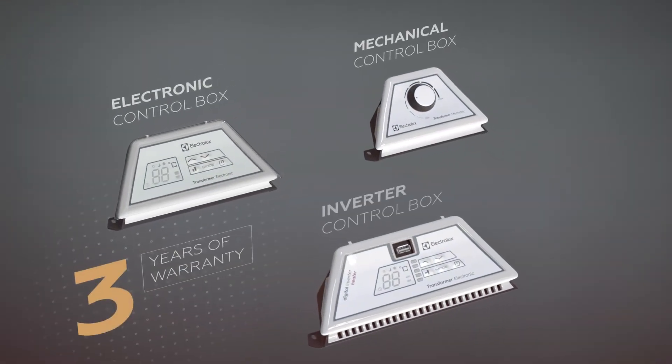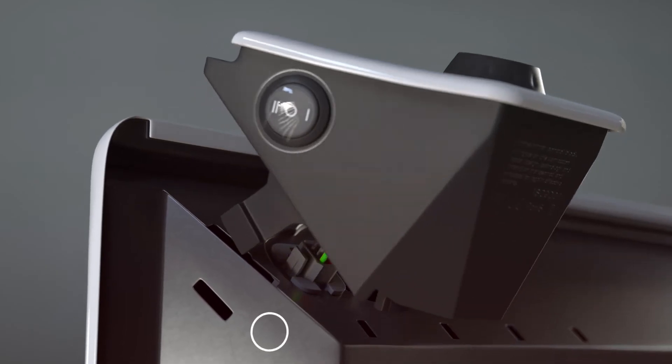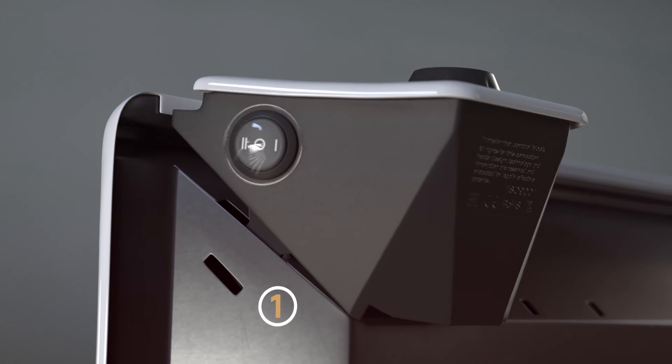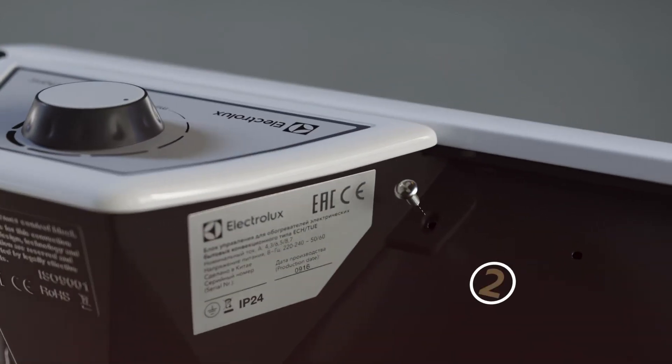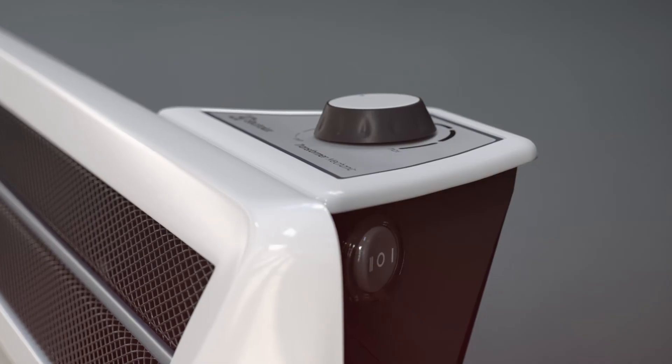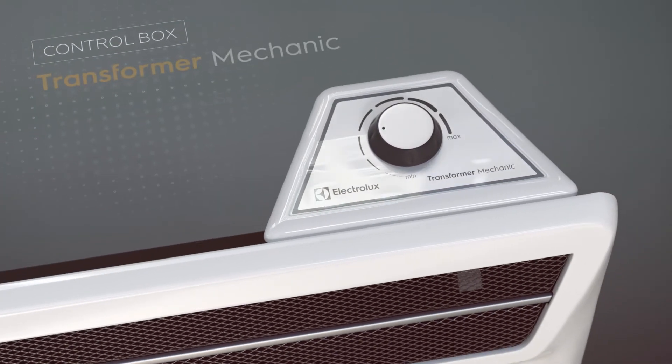The convection heater control is affected by one of three control box types. The control box installation takes an instant. The Transformer mechanic control box has two levels of power and a reliable mechanic thermostat.